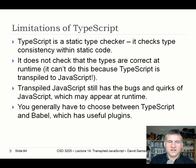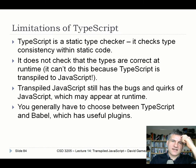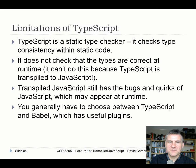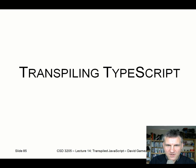One thing people perceive as a limitation is that you have to choose between TypeScript and Babel. Babel is a really popular transpiler with lots of plugins, whereas TypeScript probably doesn't have as many. So you have to choose — some people will choose to use Babel and skip the types.